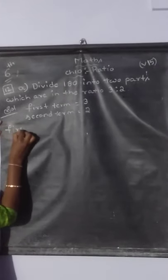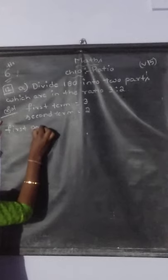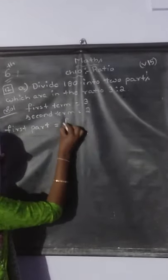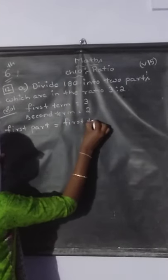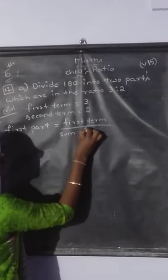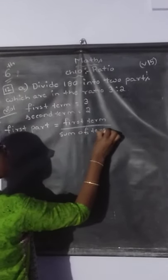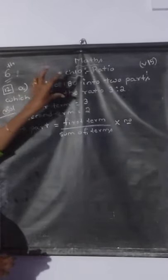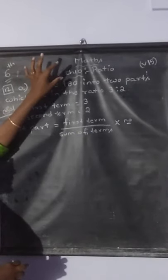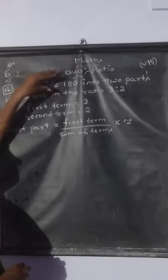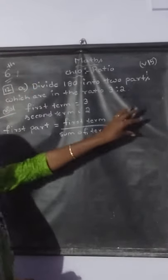For the first part, when they give you the parts like this, you should apply this formula. In order to find the first part, your formula is: first term divided by sum of terms, into the number. The number is whatever bulk value they give — it can be an amount, a number, cloth, weight, or anything — that total is the number.